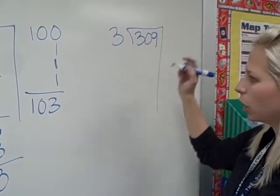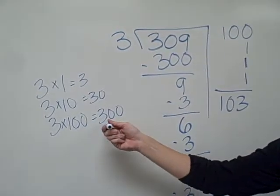309 divided by 3. We're going to do the same thing with our numbers. I'm going to use times 1, 10, times 100.